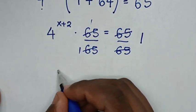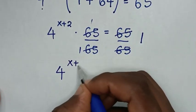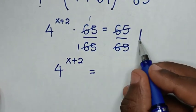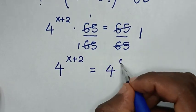Then it will be 4 power of x plus 2 is equal to 1. To have common base of 4, this 1 is same as 4 power of 0.